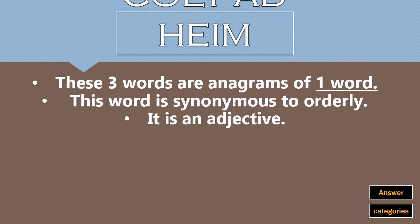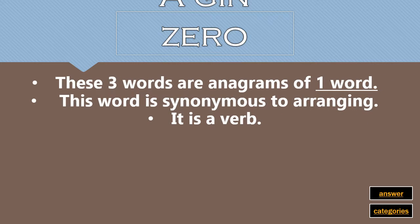Cult, Ann, Heim — these three words are anagrams of one word. This word is synonymous to orderly, and it is an adjective. What is the word? Next: A, gin, zero — these three words are anagrams of one word. This word is synonymous to arranging, and it is a verb. What is the word?